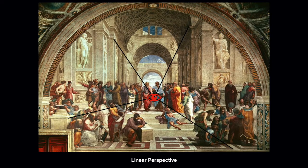A major innovation during the Renaissance was the use of linear perspective. Before this, artists understood foreground and background, but now it became formulaic — they created a vanishing point where all the lines converge. By doing this it creates a more realistic painting, turning it into the idea of a window to the world as opposed to just something we're looking at to worship or venerate.